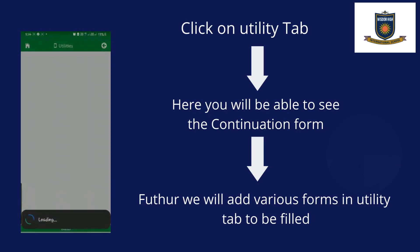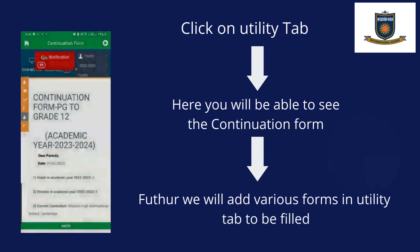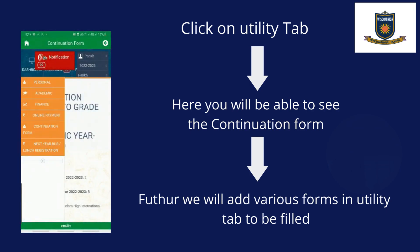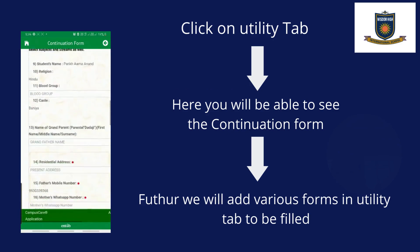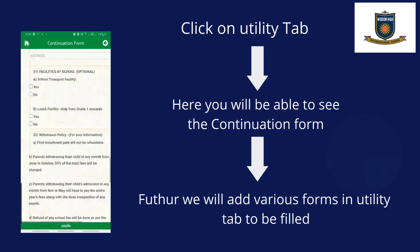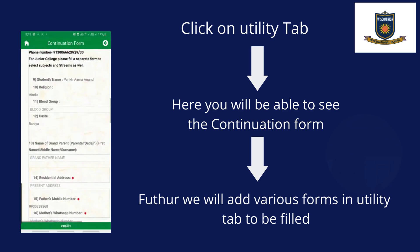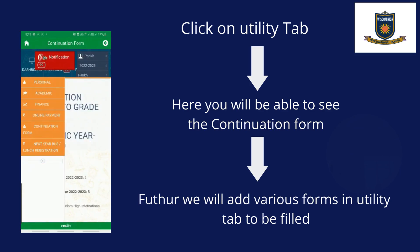Let's move on to the Utility tab. Click on the Utility tab — here you'll be able to see the Continuation Form. When you click on the Continuation Form, you'll see all the fields which you have to fill in. Similarly, various other forms will be added and shown in Utility.